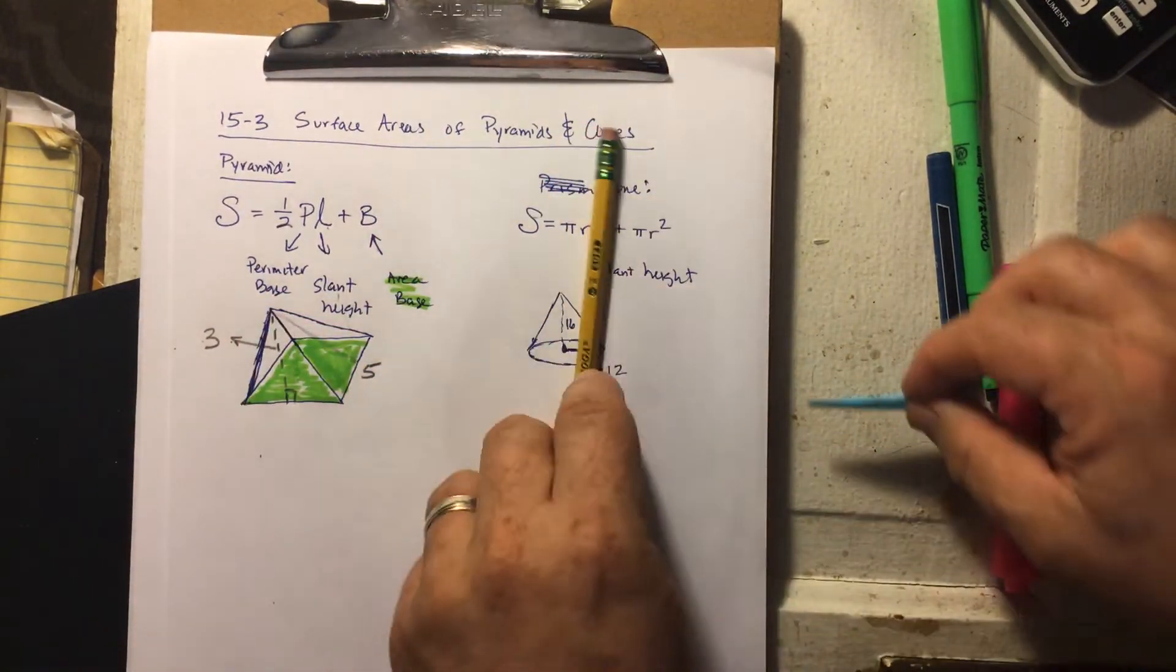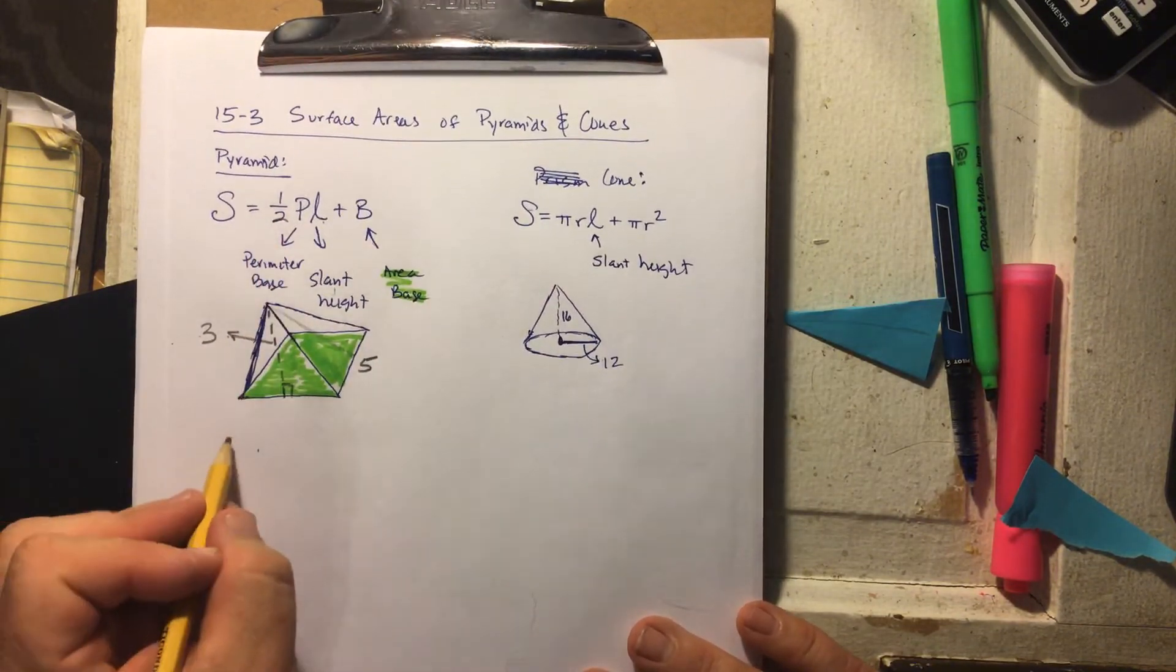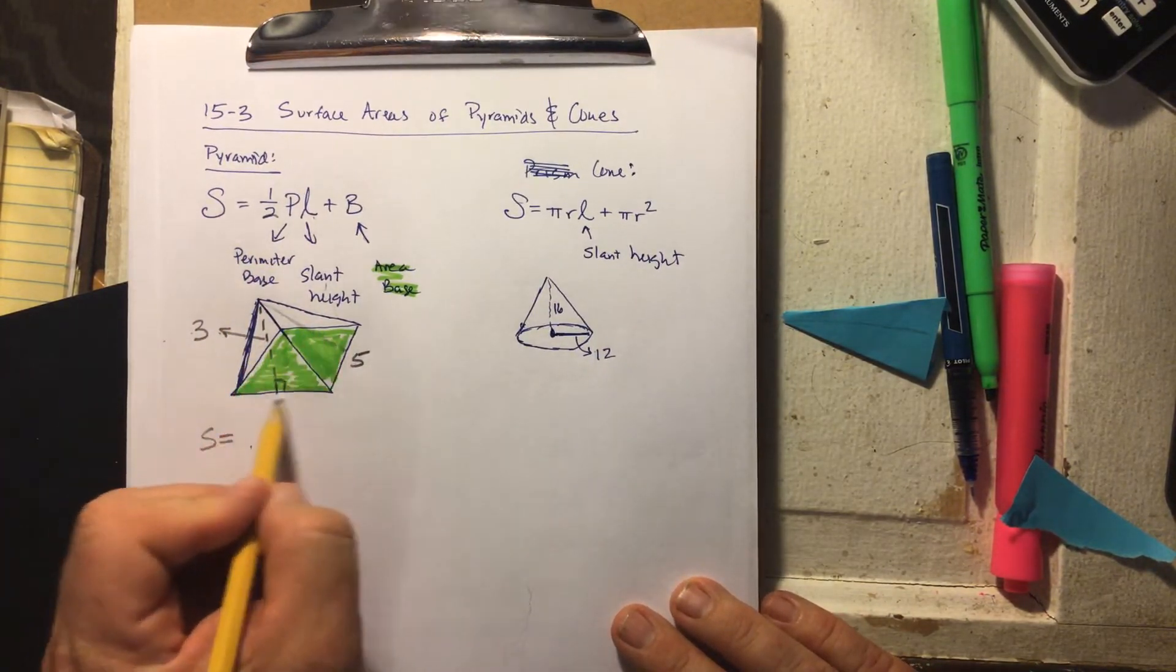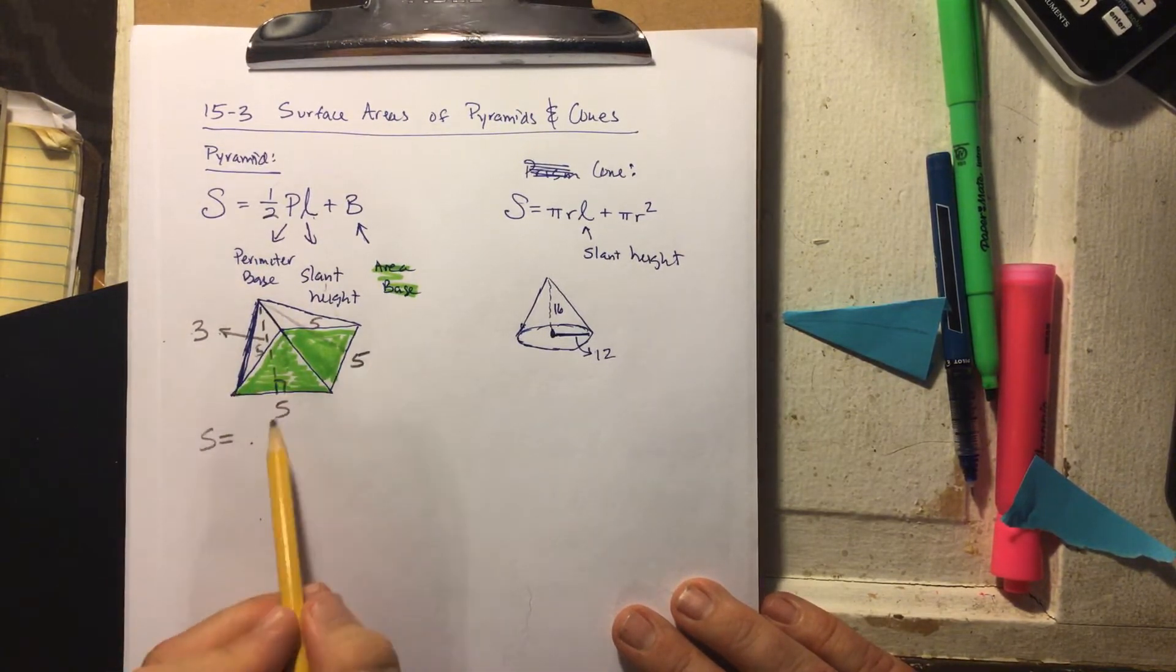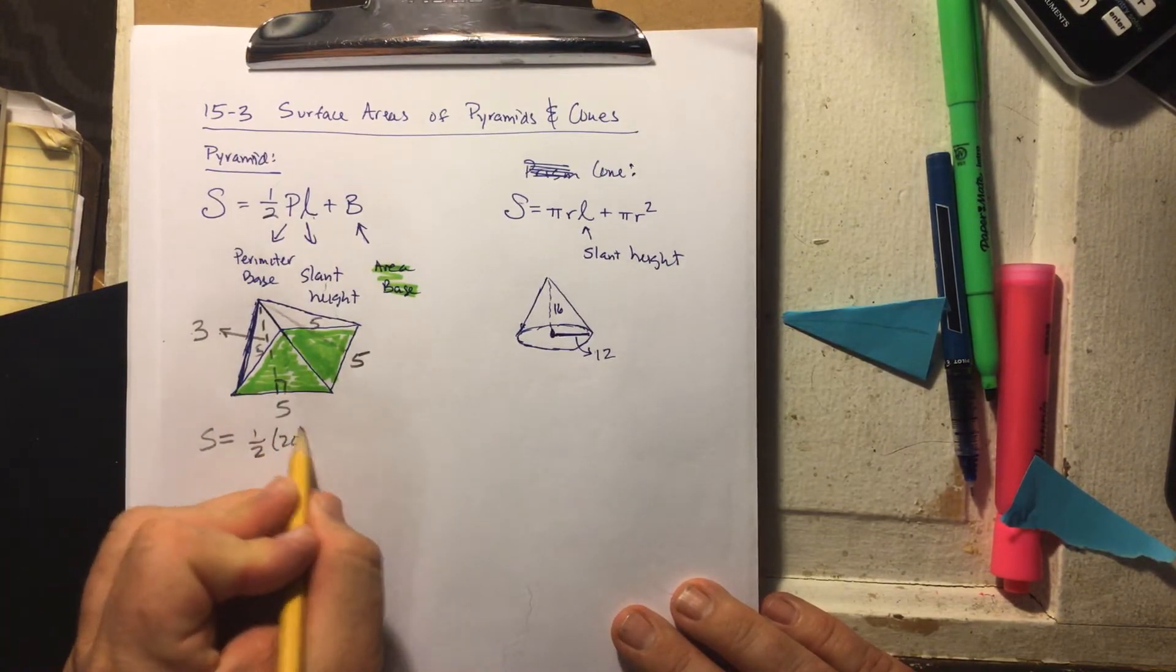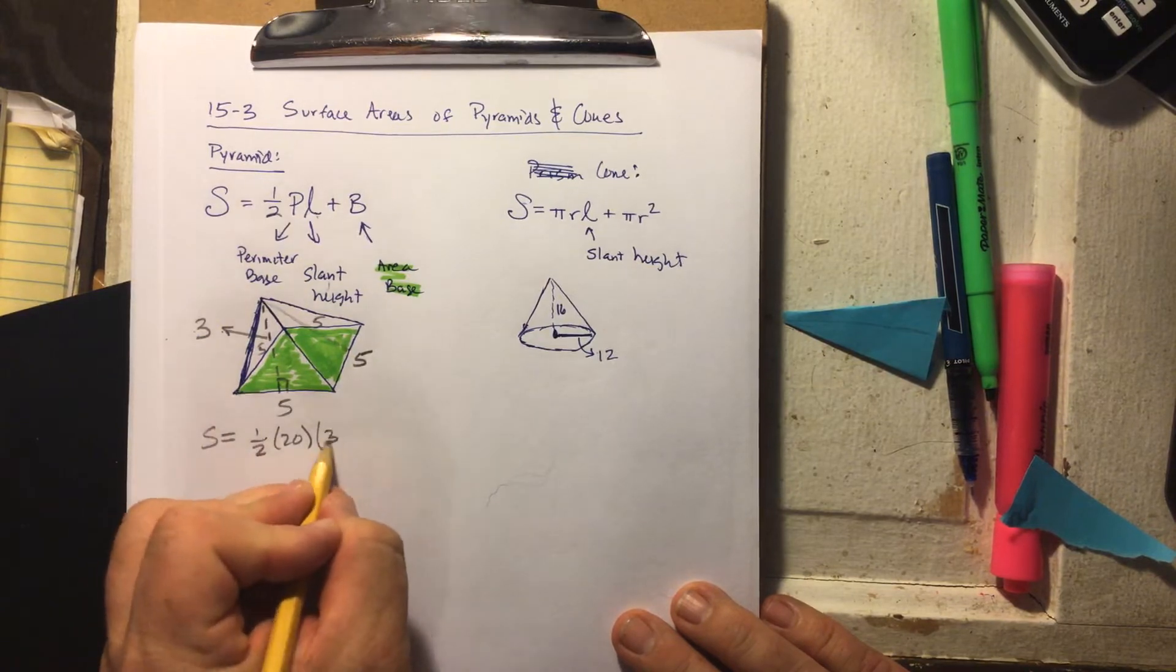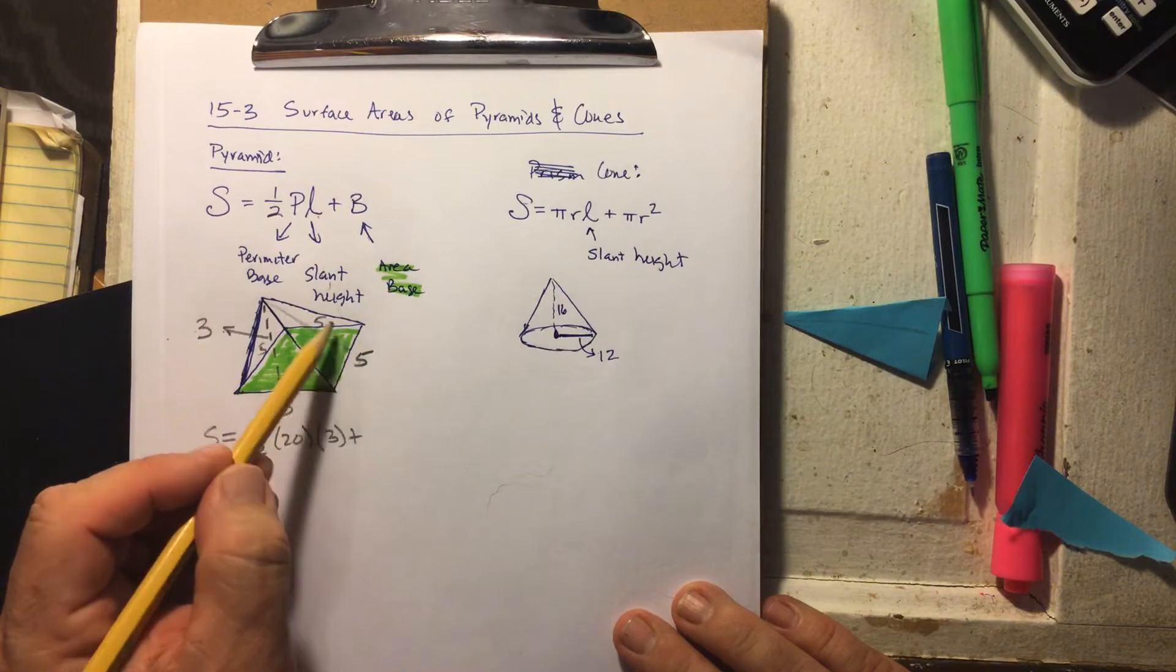And then the area of the base. So let's just tackle this one. If we're dealing with the surface area, we need the perimeter, which is all the sides added up. So if it's the same base, it's five. This is a square base, so it's 5 + 5 + 5 + 5. That's going to be one half times 20, and then my slant height which is this dotted line right here, and they give it to me, that's 3, and then we add the area of the base which is 5 times 5.